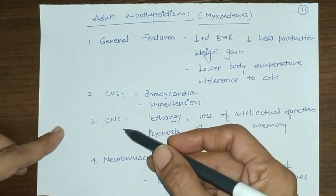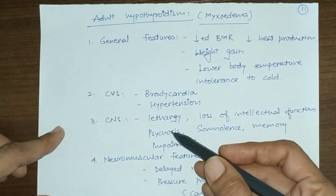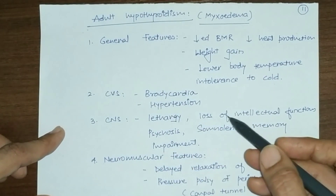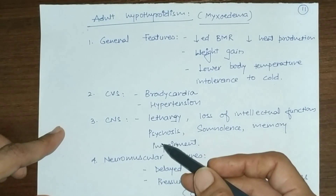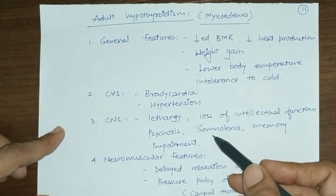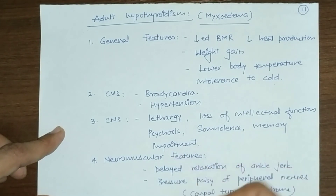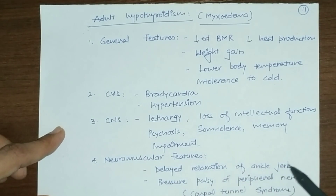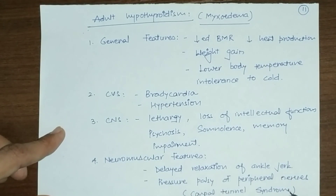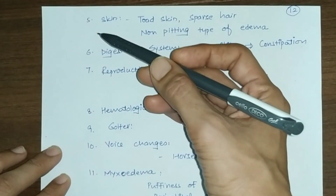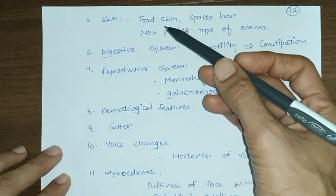Nervous system effects include lethargy, loss of intellectual functions, psychosis, somnolence (excessive sleepiness), and impaired memory. Neuromuscular features include delayed relaxation of the ankle jerk and pressure palsy of peripheral nerves — the radial nerve is commonly affected, and the person may develop carpal tunnel syndrome.